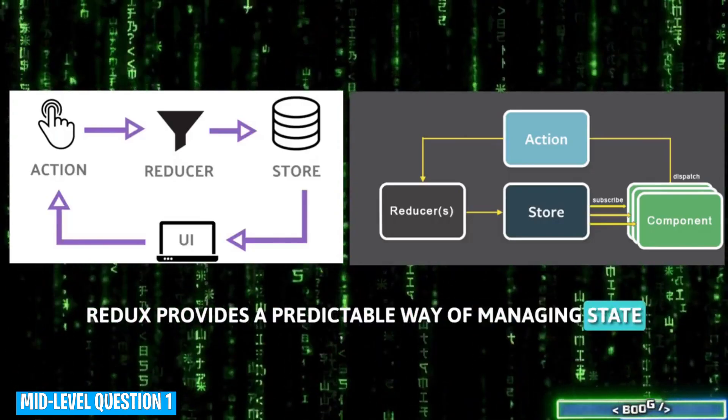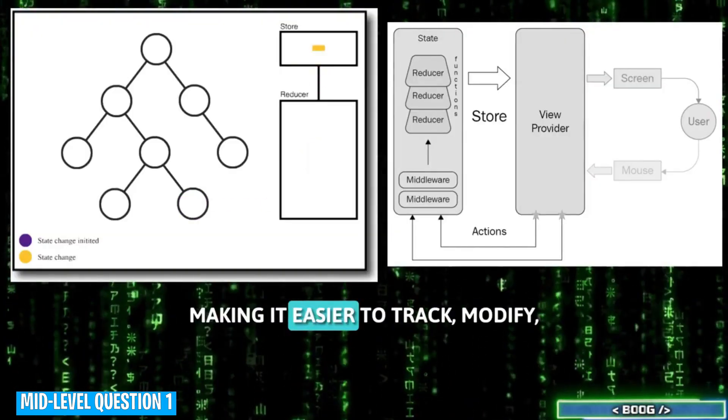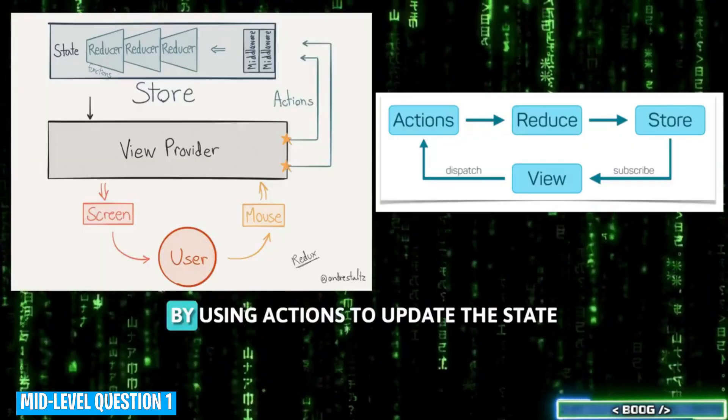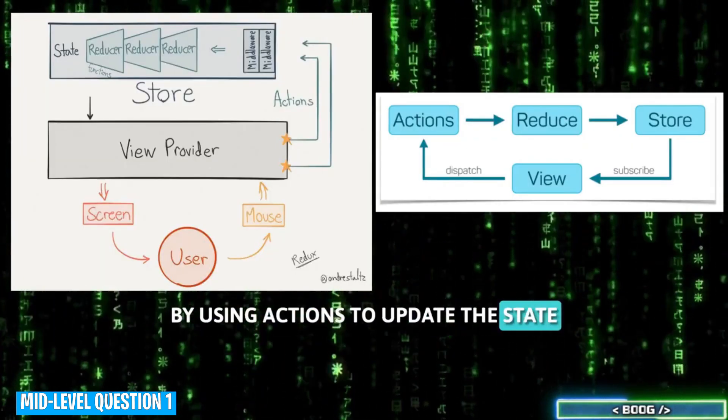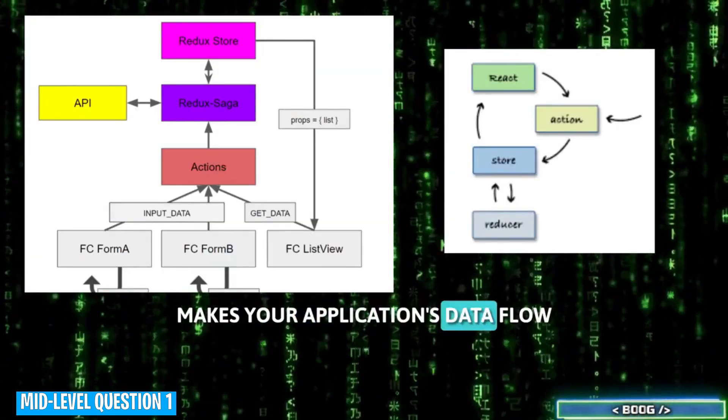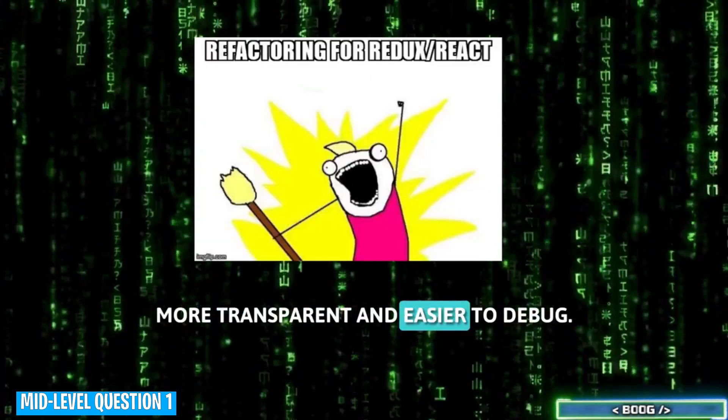In React apps, Redux provides a predictable way of managing state across the entire app, making it easier to track, modify, and maintain data across different components. By using actions to update the state and reducers to specify how actions transform the state, Redux makes your application's data flow more transparent and easier to debug.